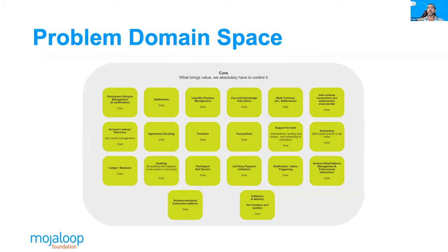These are the problems that we have identified as essential to solve so that Mojo Loop can deliver its value. In DDD terms — domain-driven design terms — these are known as the core problems. These are the ones that we need to solve ourselves and control the outcome. This is where we need to put the most effort. Examples of core problems include the transfers, the account ledger, and the participant lifecycle.